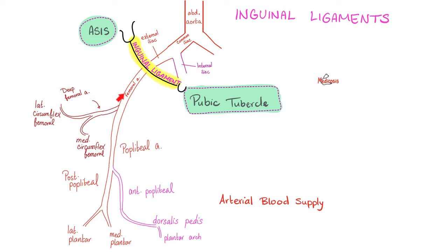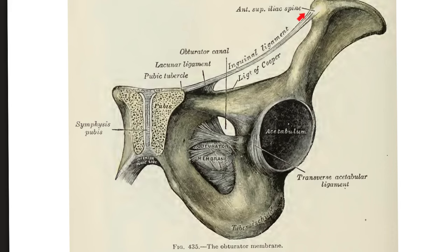The external iliac artery passes below the inguinal ligament, and then it's going to be transformed into the femoral artery — same vessel, but different names because there are different locations. This is the pelvis; this is the lower limb. The inguinal ligament extends from the anterior superior iliac spine to the pubic tubercle.